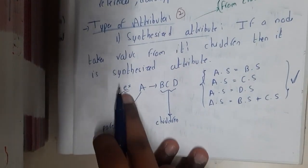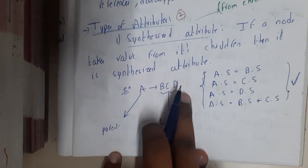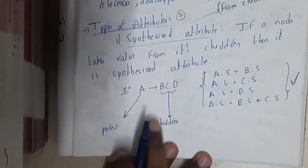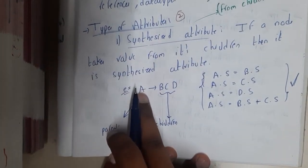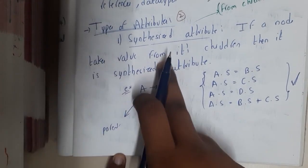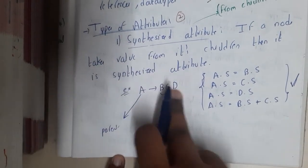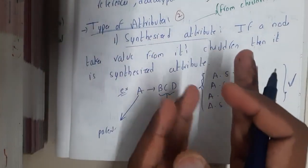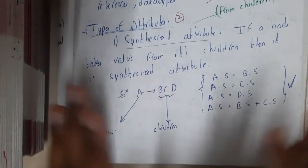So here, the value of A, if it is depending on B or C or D or any kind of combination, then we call it a synthesized attribute. Synthesized attributes will depend on its children - remember that.